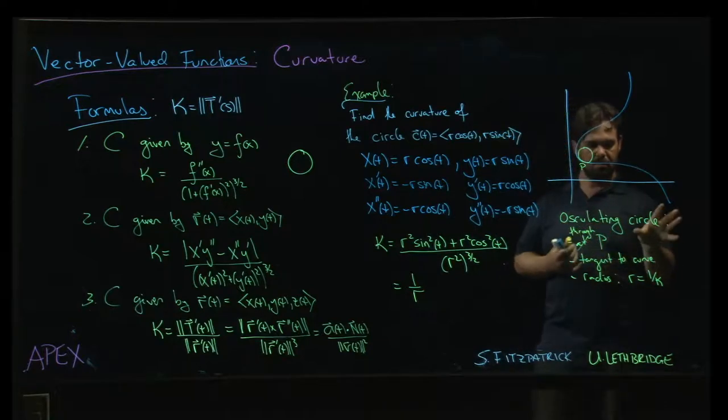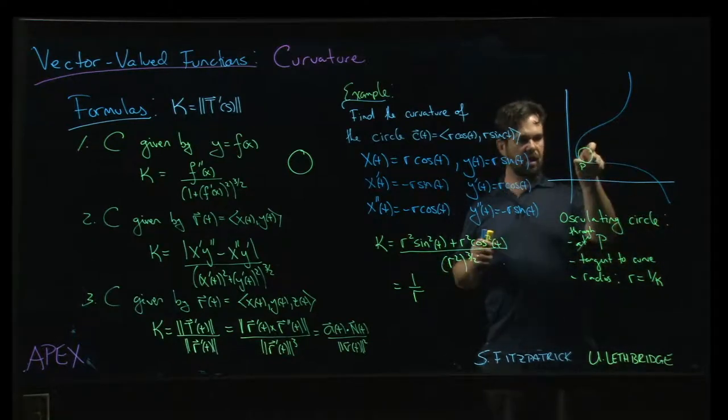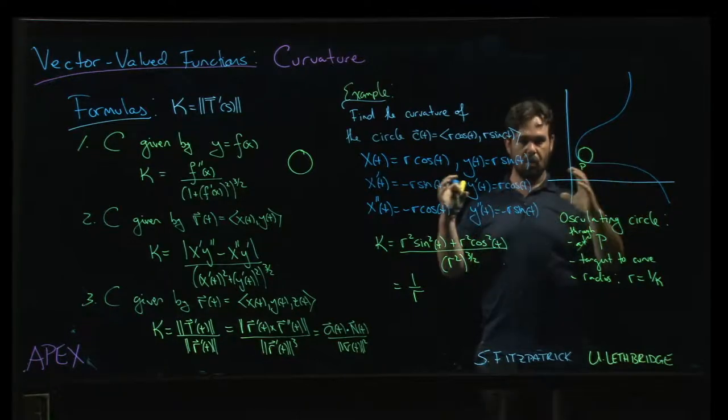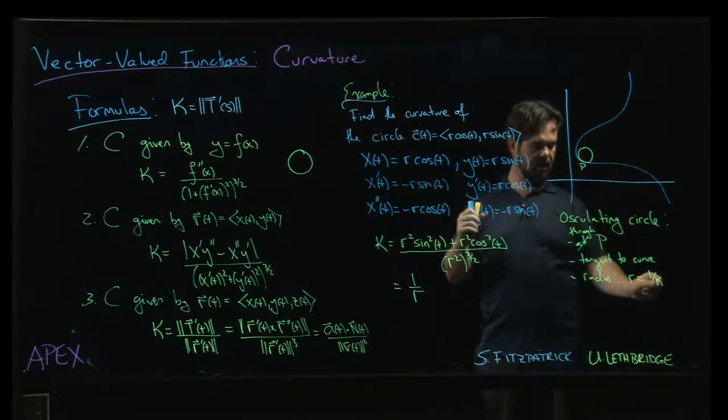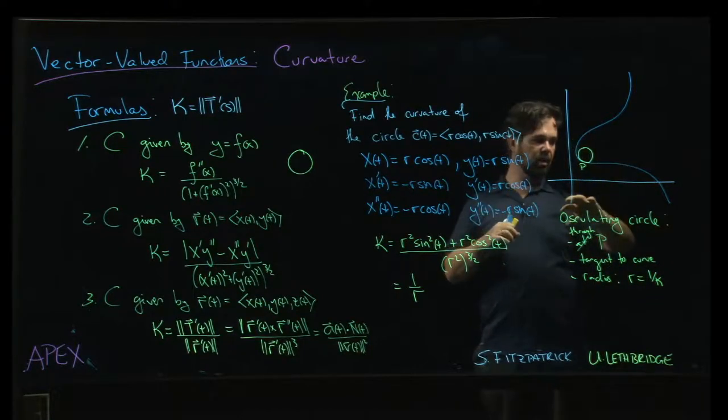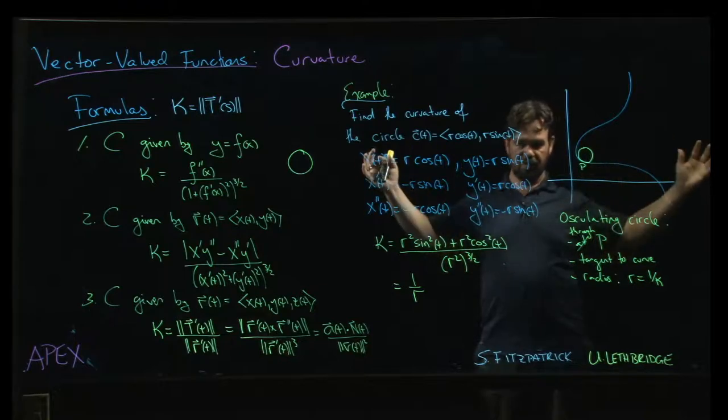So you can imagine that this circle rolls along the curve. At points where there is more curvature, the radius shrinks to fit so it stays in. And at places where there is less curvature, the radius can grow.